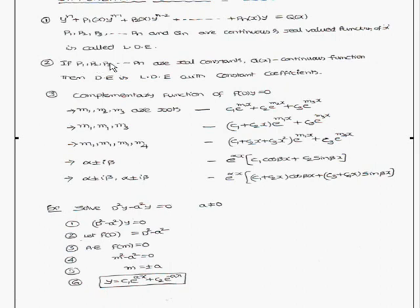If p1, p2, p3, and so on up to pn are real constants, and q(x) is a continuous function, then the differential equation is called a linear differential equation with constant coefficients.